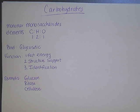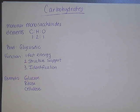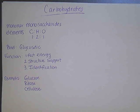At this point for our carbohydrates notes, you have some of the basic foundational information that you need, such as the monosaccharides or the monomers. The elements that make up carbohydrates are carbon, hydrogen, and oxygen in a one-to-one ratio. The type of bond is glycosidic. The functions of carbohydrates are: fast energy, structural support — we'll talk about that when we go into detail about cellulose — and identification, which we'll cover in unit two when we look at the plasma membrane.